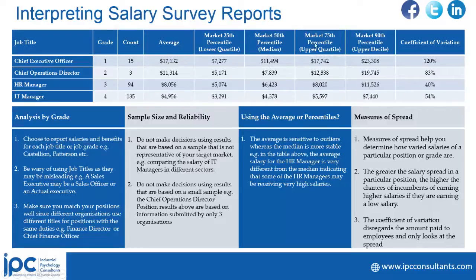Then after that, you go to the 75th percentile. If you are paying at the 75th percentile, it means you are paying better than 75 percent of the companies in the norm sample, which means you are in the top 25 percent of companies in terms of pay. Then others look at the 90th percentile, which means you are paying better than 90 percent of the companies in the sample. Very crucial information.